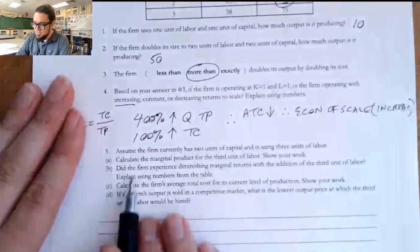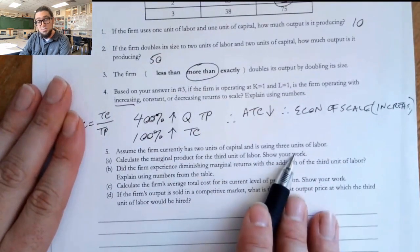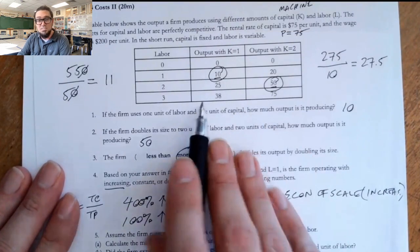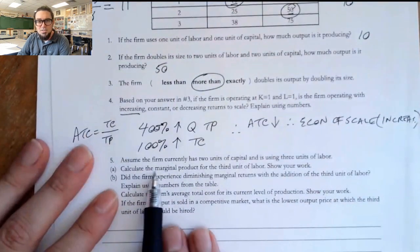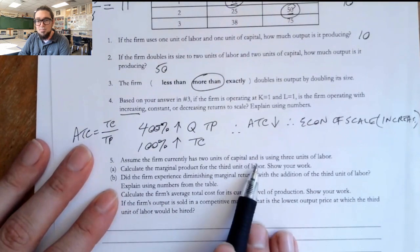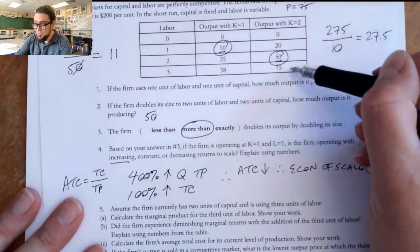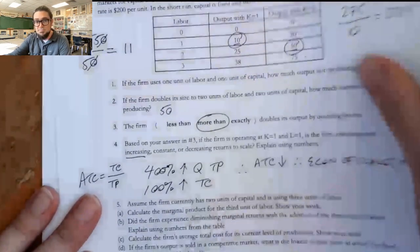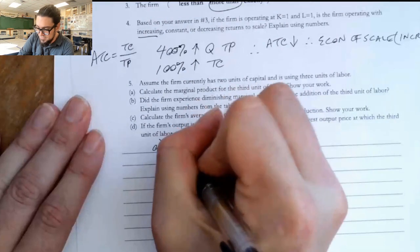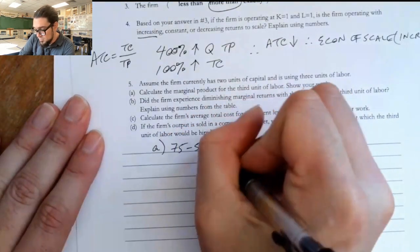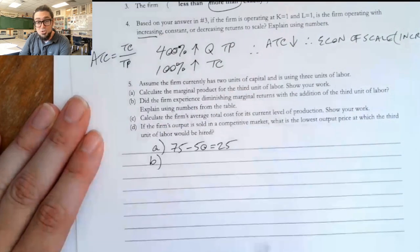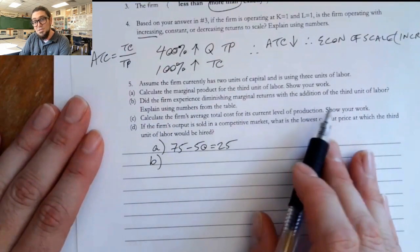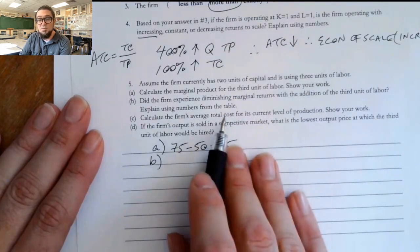Now, the last part, assume the firm currently has two units of capital and is using three units of labor. So two units of capital, three units of labor, we're producing 75 units. Calculate the marginal product for the third unit of labor. Show your work. So when we went from the second labor to the third, we went from 50 to 75. So we'd say part A is 75 minus 50 equals 25. That's just the marginal product of that last worker.